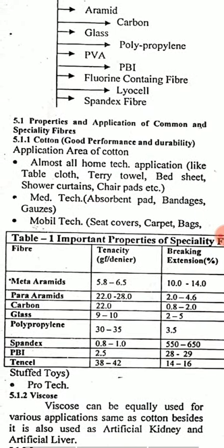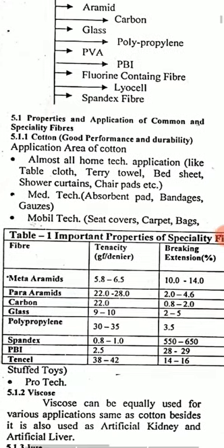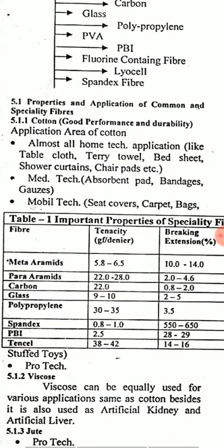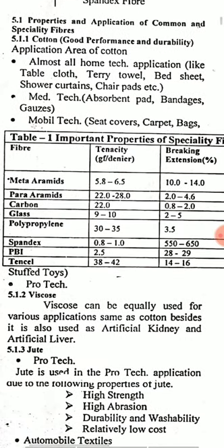Properties and application of common and specialty fibers. First of all, cotton: good performance, durability, and good abrasion resistance are its basic properties. Application areas of cotton include almost all hometech applications like tablecloth, terry towel, bed sheet, shower curtains, chair pads, etc. In medtech, cotton is used for absorbent pads, bandages and gauzes. In mobiletech, seat covers, carpet and bags are made of cotton.